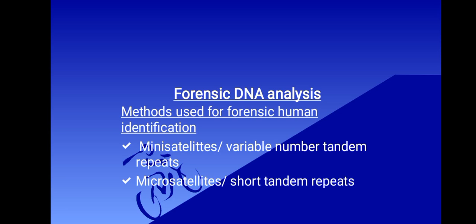There are two important categories of tandem repeats that have been used widely in forensic genetics. The first one is minisatellites, also referred to as variable number tandem repeats (VNTRs). And you also have microsatellites, which are also referred to as short tandem repeats, commonly abbreviated as STRs.